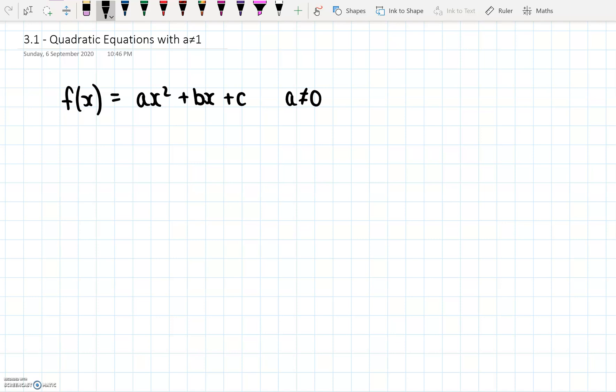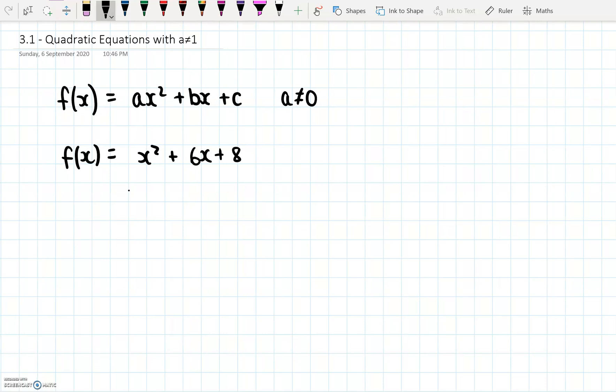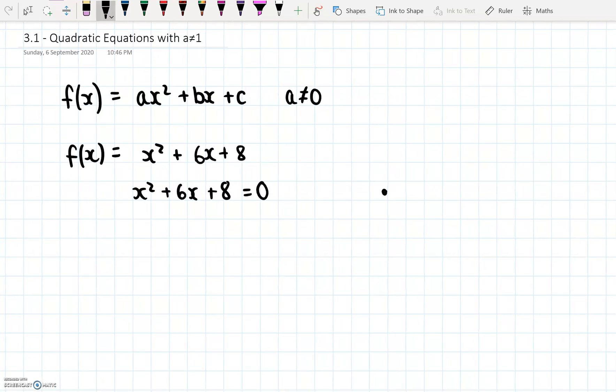So normally in the examples we've done so far, we've had where a is always equal to 1, so the coefficient of x² has always been 1. So as an example, we may have had f(x) = x² + 6x + 8. And if we make that equal to 0, so if we make x² + 6x + 8 equal to 0, and we want to solve this, we do this using the product sum method. And for the product sum method, we are looking for two numbers that multiply to give c, and that add to give b.